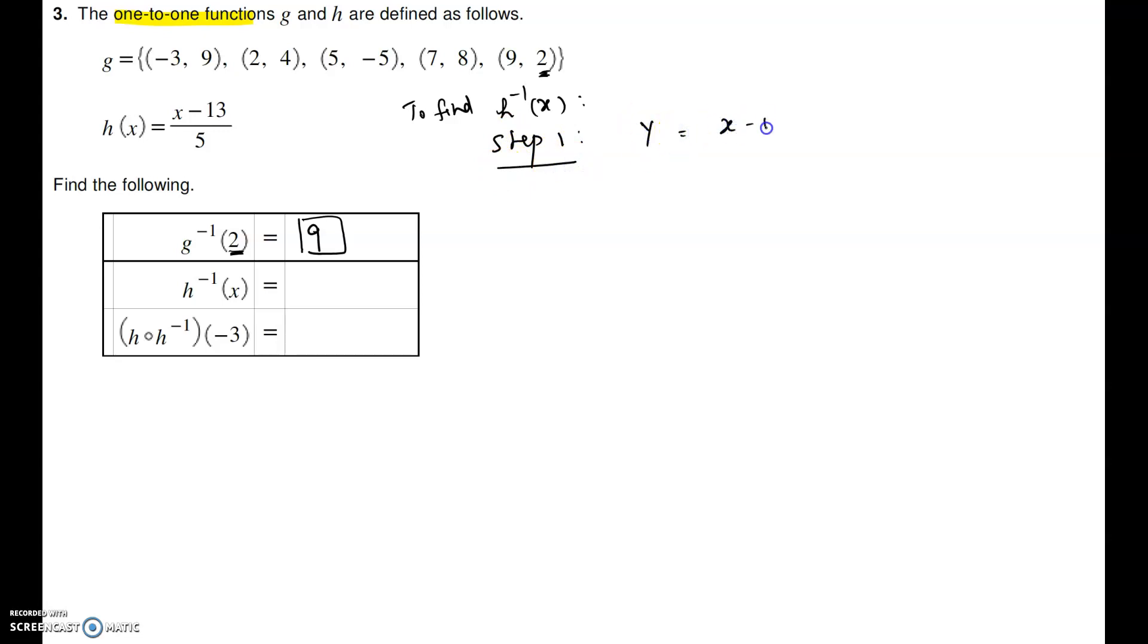So y equal to x minus 13 divided by 5. Step 2 is to switch x and y or interchange x and y. So x is y minus 13 over 5.